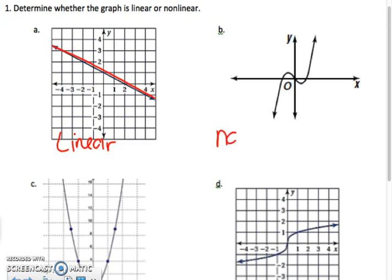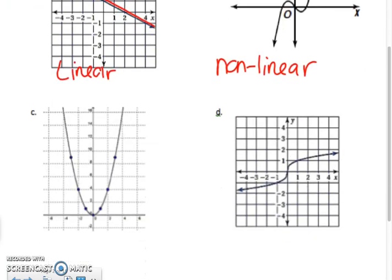B would be nonlinear because it has curves. C is going to be nonlinear because it was not a straight line. You've got some curves.